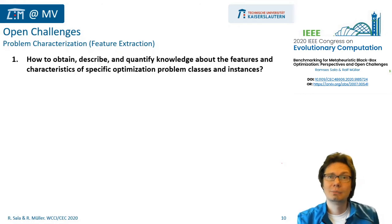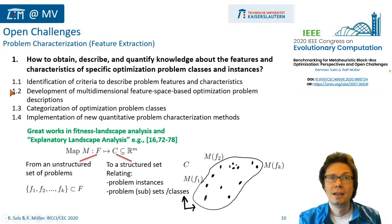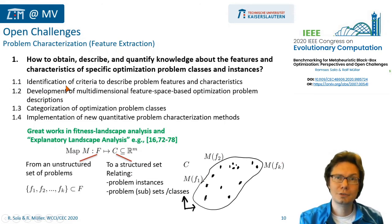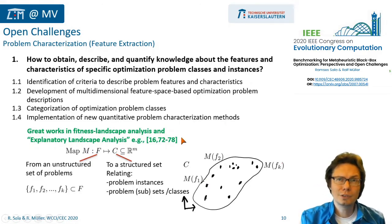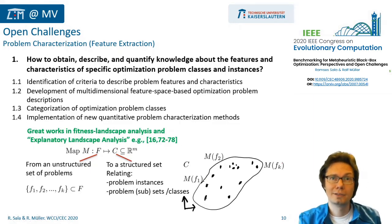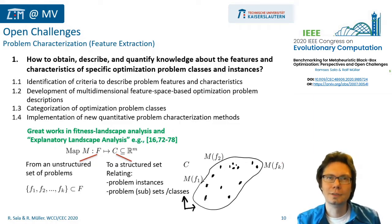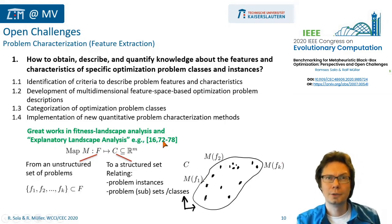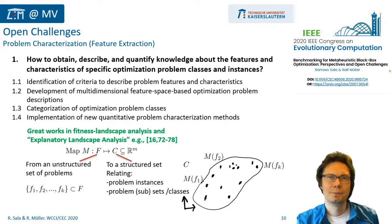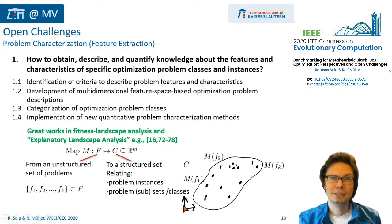This challenge can be split up in various topics to address. The first is the identification of criteria to describe problem features. Some great work has been done in the field of fitness landscape analysis. But unfortunately, this field is still relatively small compared to the field of the development of new algorithms. There is also a bit of a trend to try to capture the difficulty of problems in a single measure, where it seems more realistic and promising to look for multidimensional feature-based problem descriptions.